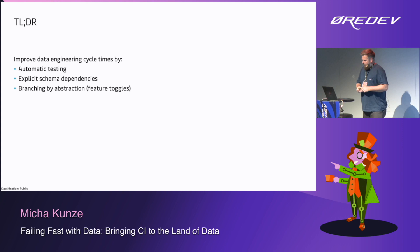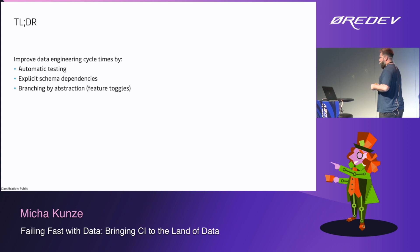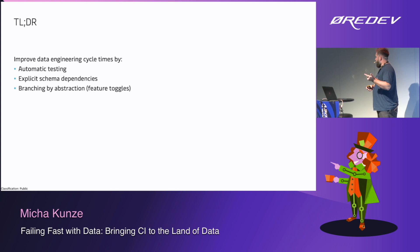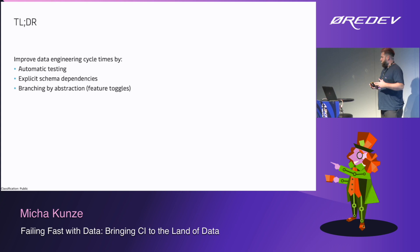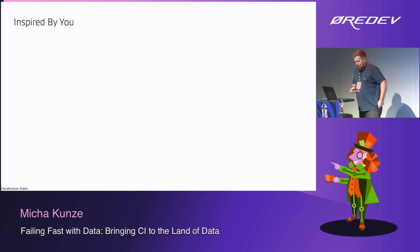Before you fall asleep, this is what I want you to take away from this talk. We're trying to improve the engineering cycles, and specifically data engineering dev cycles, which are slightly different from software engineering — I'll go into detail later. We're doing this by using automatic testing, explicit schema dependencies, and branching by abstraction. In a room of software engineers this might not be controversial, but if you go to the data world, it is controversial.